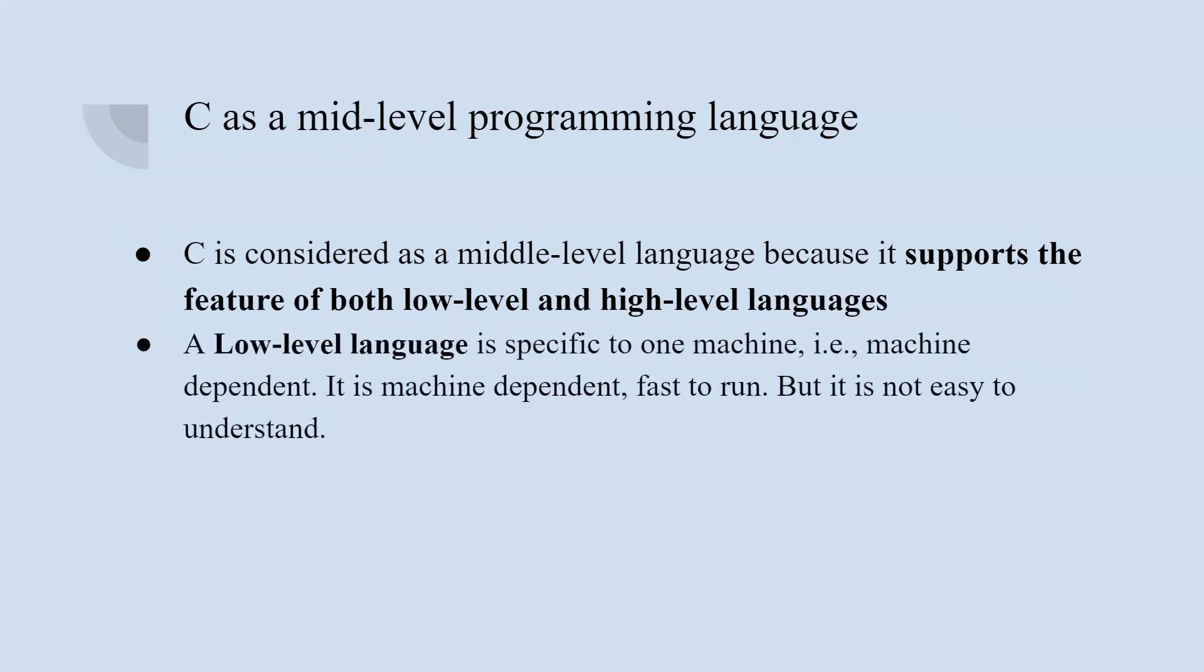Low-level languages are specific to one machine and machine-dependent, which makes them run very fast. High-level languages are not specific to one machine - they can run on multiple machines, are machine-independent, and are easy to understand.